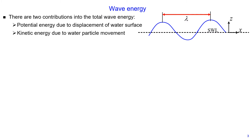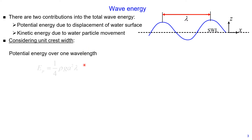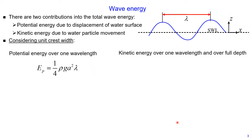There are two contributions to the total wave energy: potential energy due to displacement of the water surface, and kinetic energy due to water particle movement. Considering a wave with wavelength lambda and unit crest width, we can derive equations for potential energy and kinetic energy over one wavelength and over full depth. These two equations are the same: 1/4 multiplied by specific weight, multiplied by amplitude squared, multiplied by wavelength.